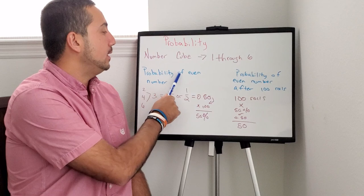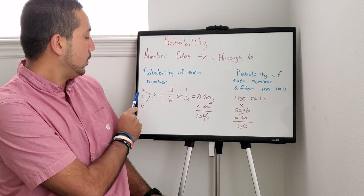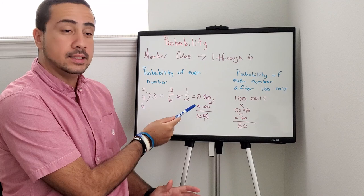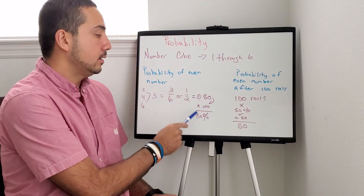How many even numbers? You have 2, 4, and 6. That means three numbers. 3 over 6 choices or simplify 1 over 2. That'll equal 0.50 or 50%.